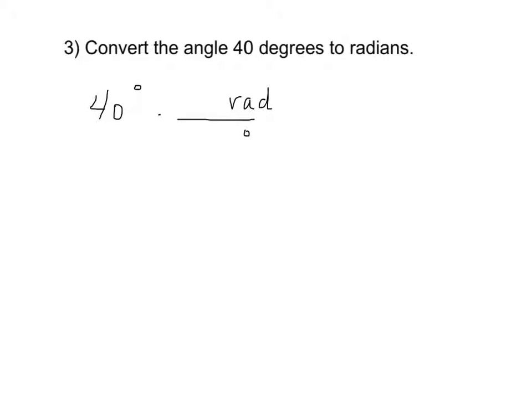So now I just need to fill in two numbers that I know are equivalent, so it's kind of like multiplying by one. We're not changing the value of the problem, we're just switching over the units. The one that I like to use the most is the fact that 180 degrees is the same as pi radians.